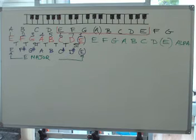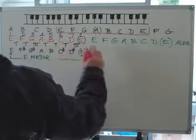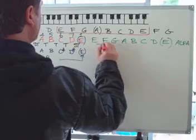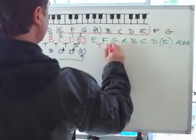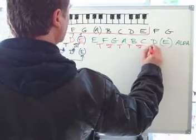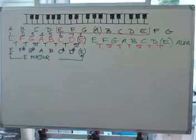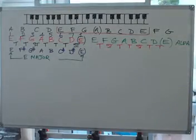Now I want to produce the E natural minor scale. There's a different formula than this one here. So I'm going to do it in red. It's tone, semitone, tone, tone, semitone, tone, tone. Now I'll show you why we get that later on.